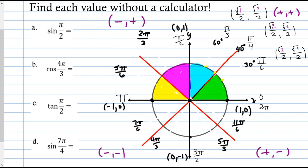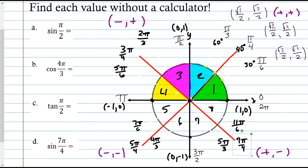I've now cut the unit circle into all its wedges and found all coordinates. The top half is cut into four 45-degree wedges, and the bottom half as well. There's the whole unit circle. I'll clean this up and answer the questions.